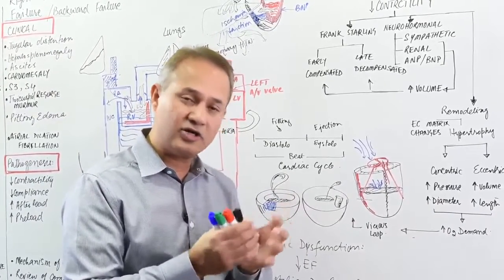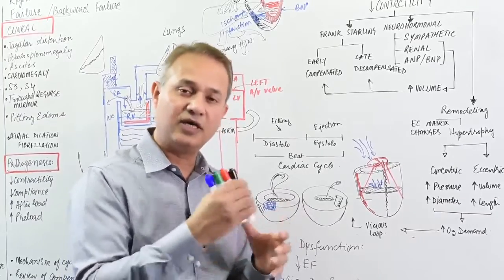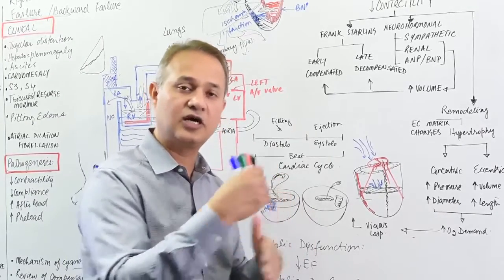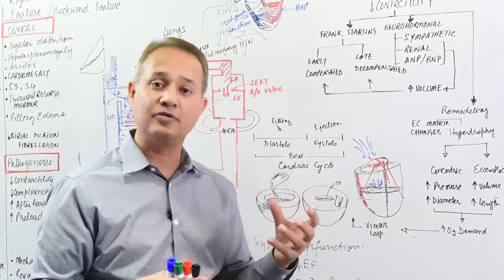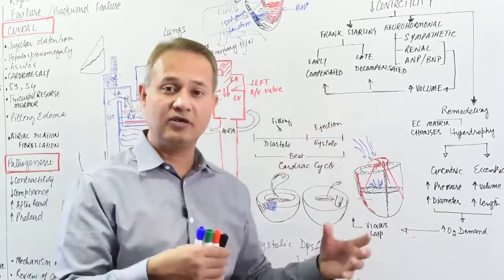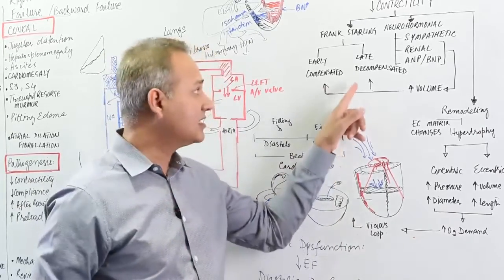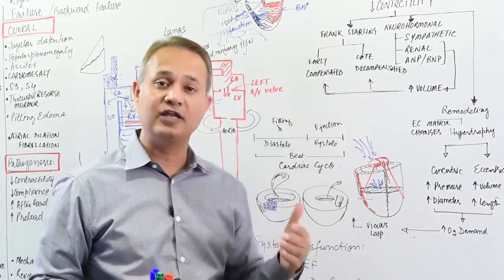However, as the damaged heart continues to exert force but cannot create good cardiac output, it becomes hypertrophied. If you don't step in or if those mechanisms don't find a balance, then decompensated cardiac failure occurs.